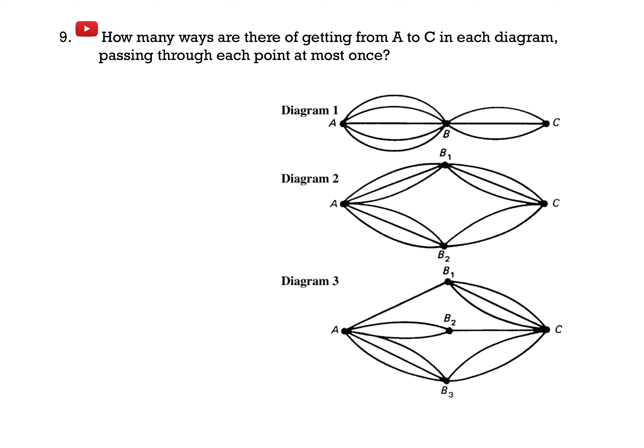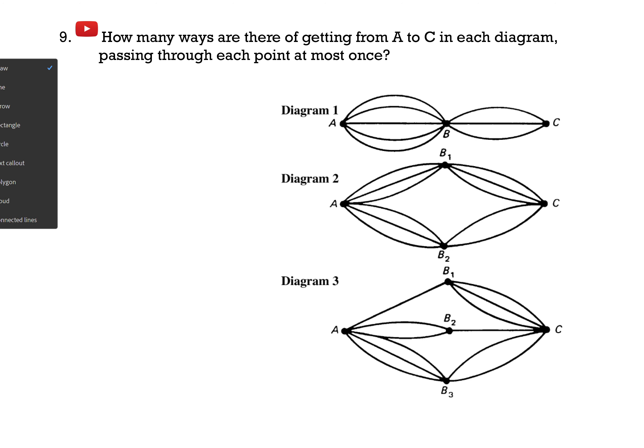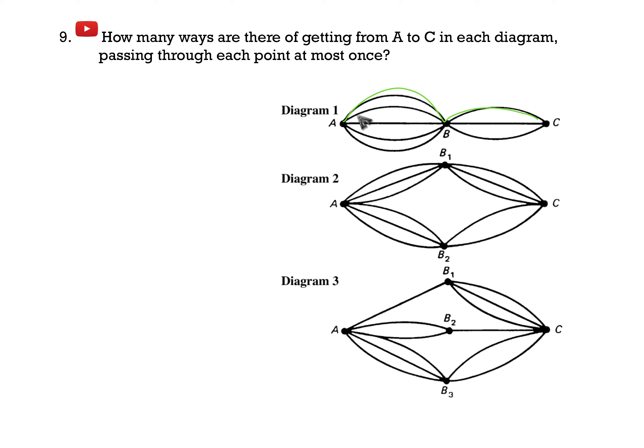Question 9: How many ways are there to get from A to C in each diagram, passing through each point at most once? There are a couple of ways of doing this. The long way, which I don't recommend, would be to actually count them individually — for example, 1, 2, 3, and so on.